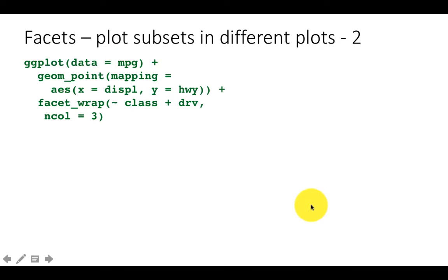So going further, this time we are saying again data is mpg, geom point, mapping, x is displacement, y is highway. So we want a scatterplot because we are saying geom point. Facet wrap, this time we are doing the facet wrap by two variables, class and drive.